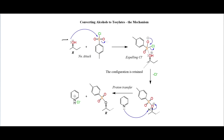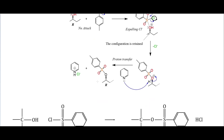The mechanism for tosylation: our alcohol attacks the sulfur on the tosyl chloride, the electrons move up onto the oxygen, and when they collapse back down we remove the chloride, giving us the tosylate intermediate. We then bring in pyridine to deprotonate the oxygen, and so we end up with our tosylate ester.